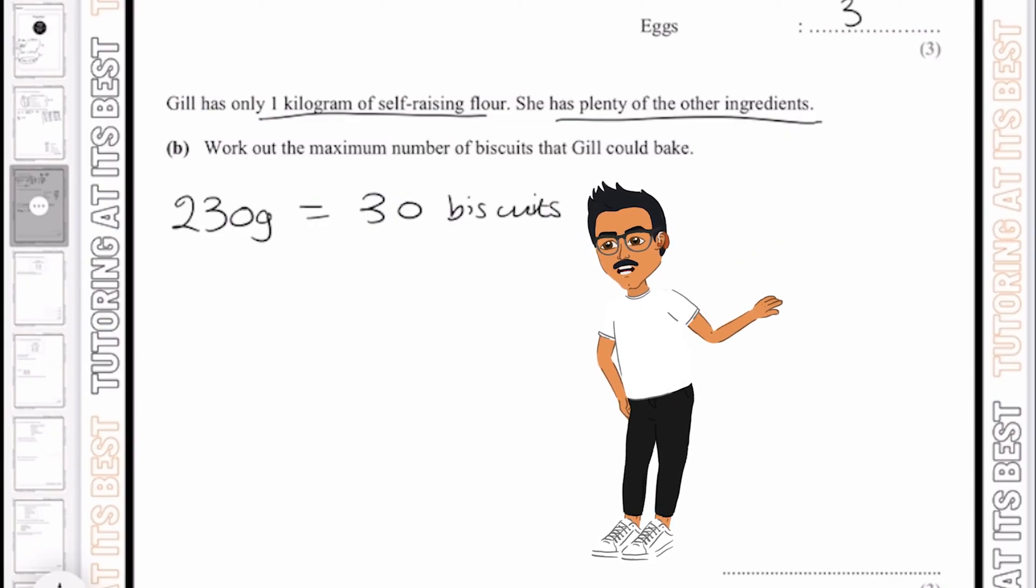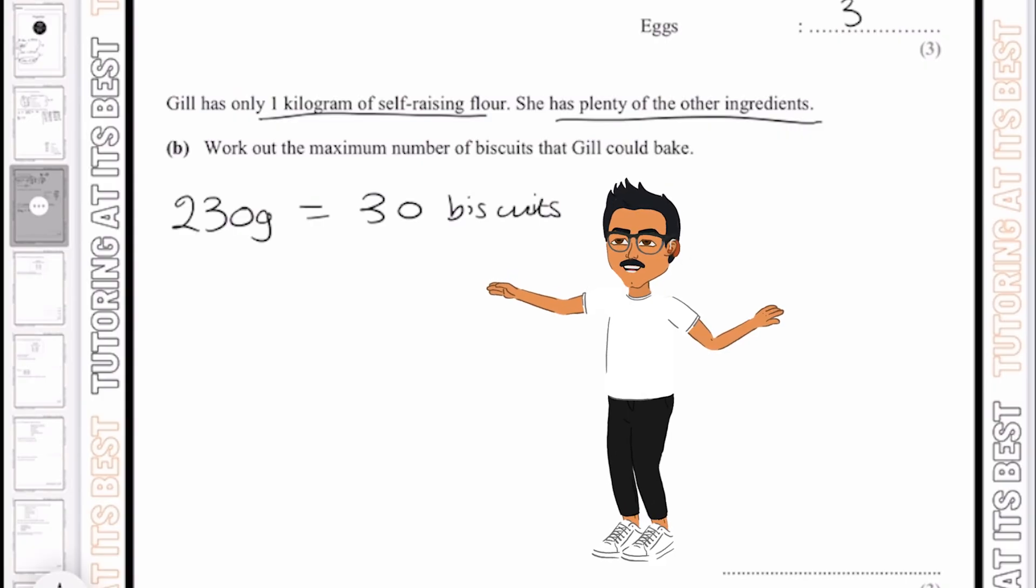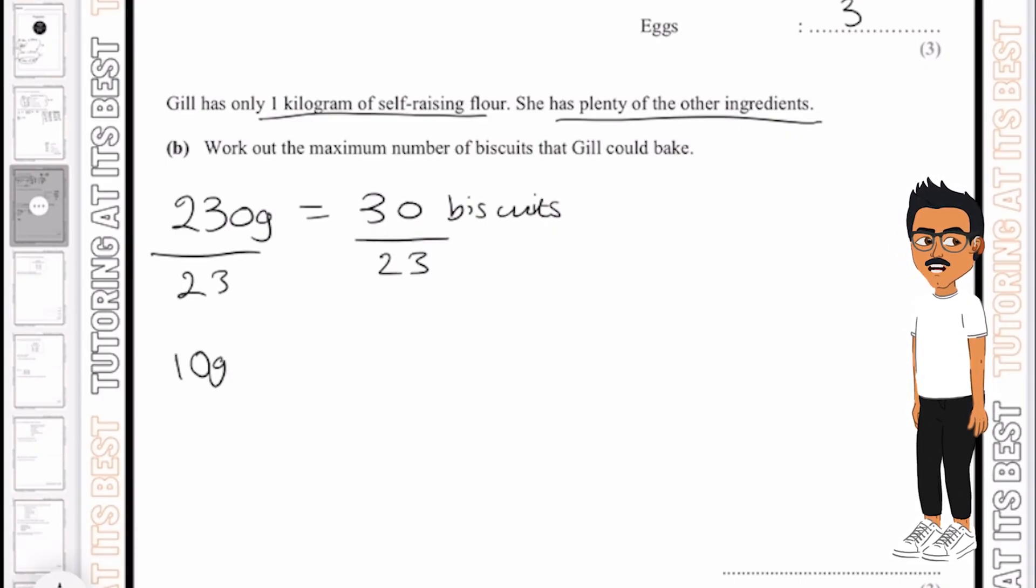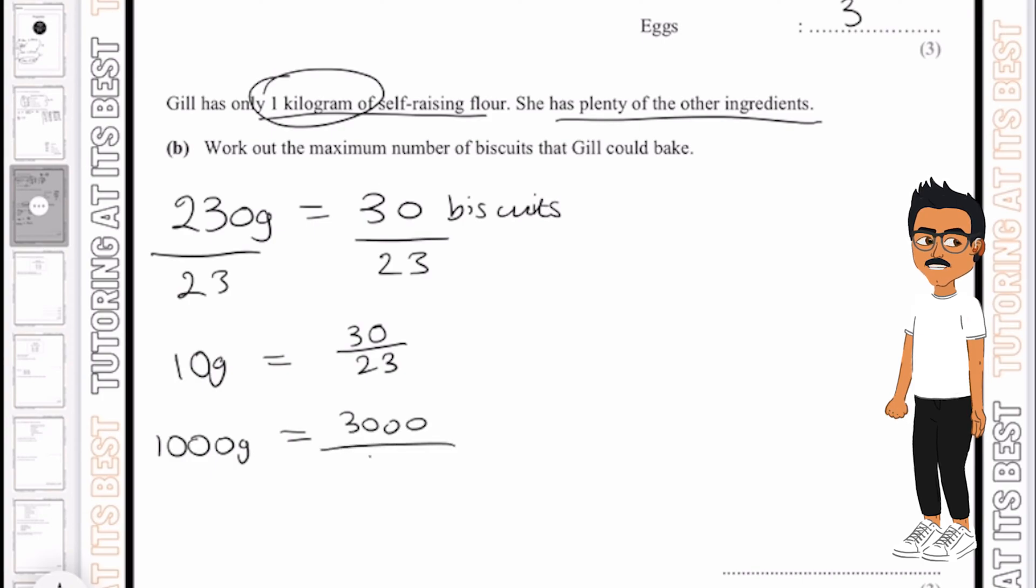So what I'm going to do here is I'm going to calculate the value of 100 grams first. So that means I would have to divide both sides by 23, which would then give me 10 grams, which would be 30 over 23. And then if I times this by 100, that would give me 1000 grams, which is what we need. And that would then give me 3000 over 23.